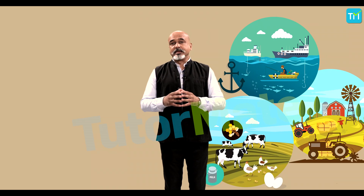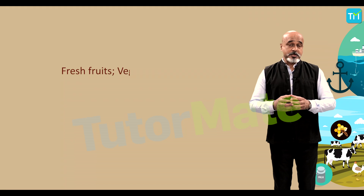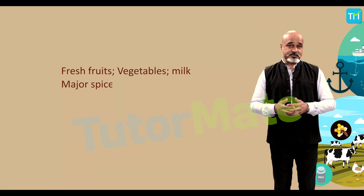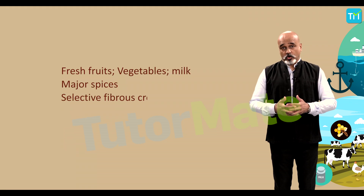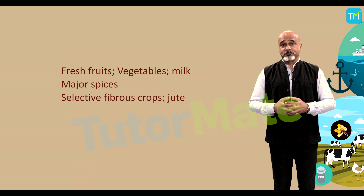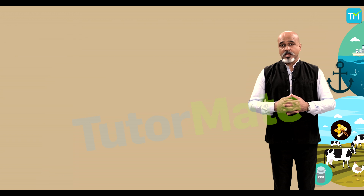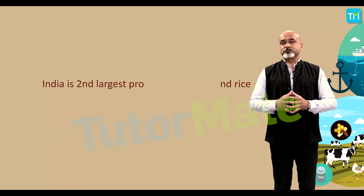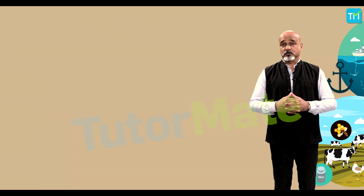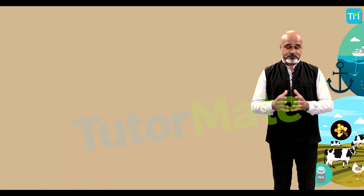India ranks second in worldwide farm output. It is the largest producer of fresh fruits, vegetables, milk, major spices, selective fibrous crops like jute, staples like millets, and castor oil seed. India is also the second largest producer of wheat and rice, the world's major food staples.